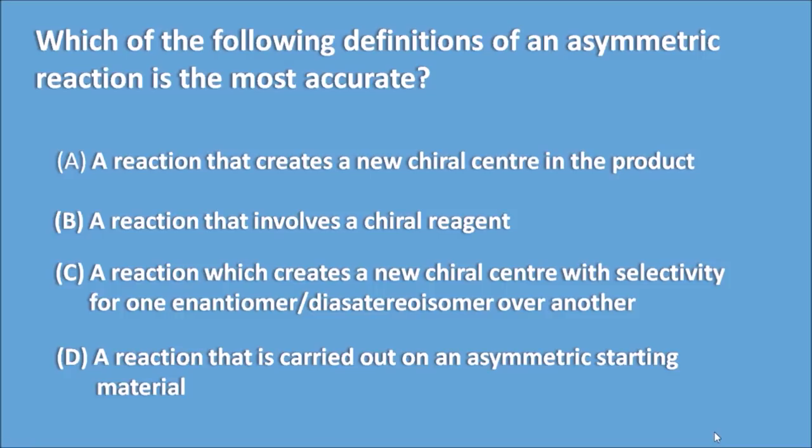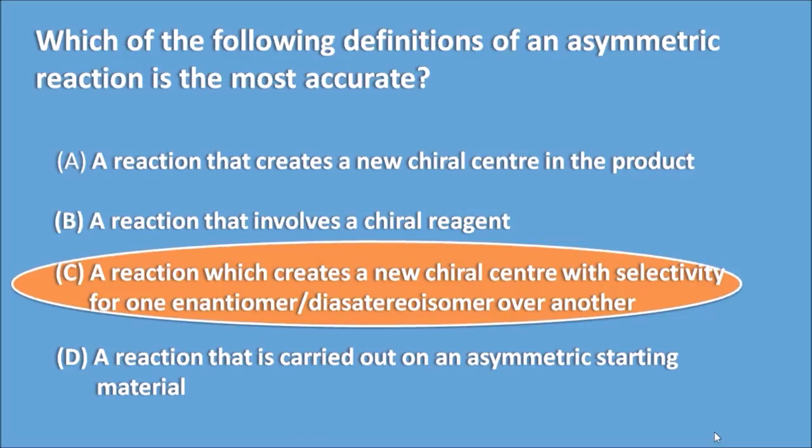To simplify the options: A indicates the product is chiral, B indicates the reactant is chiral, C indicates the product is chiral with either enantiomeric or diastereomeric pairs — one forming as major and one as minor — and D indicates the starting material is chiral. The correct answer is Option C: a reaction which creates a new chiral center with selectivity for one enantiomer or diastereomer over another.